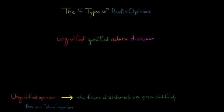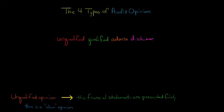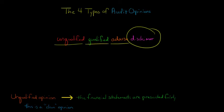In this video, we're going to discuss the four different types of audit opinions. Every year, a company is going to hire an auditor to come in and express an opinion regarding its financial statements. That opinion could be unqualified, it could be qualified, it could be an adverse opinion, or it could be a disclaimer of opinion. I want to go through each of these in turn and explain what it means.